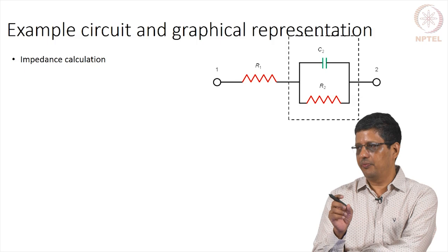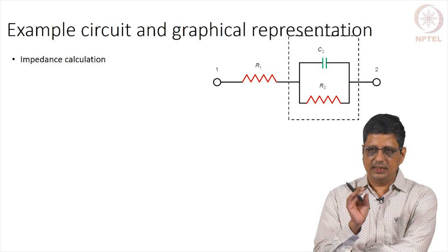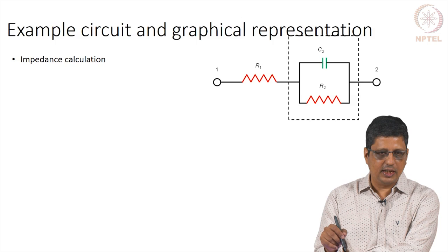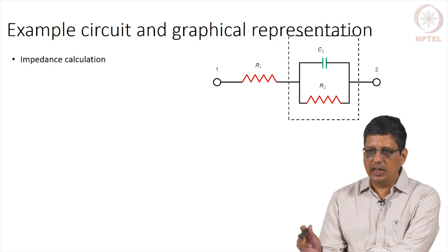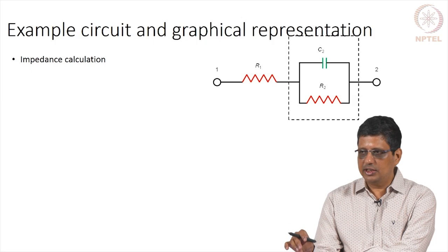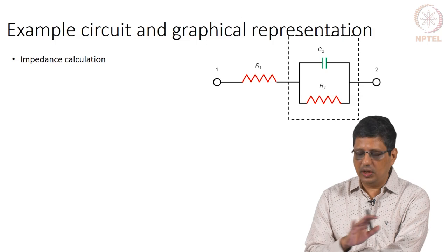We assume mass transfer is very fast. We assume the reaction is very simple, a straightforward one-step reaction. We assume that the other side has a good reference electrode, therefore its impedance is 0. R1 represents the solution resistance. C2 represents the double layer capacitance and R2 represents the reaction. Sometimes this is called Randles' circuit. Sometimes mass transfer resistance is also added and that is also called Randles' circuit.